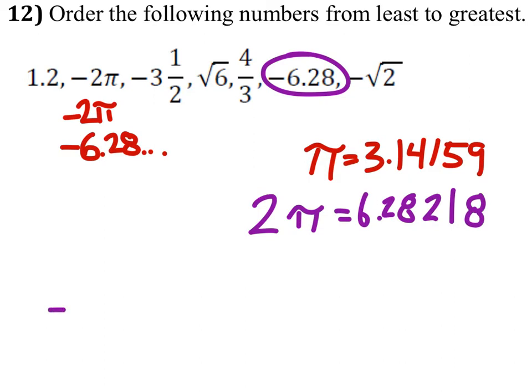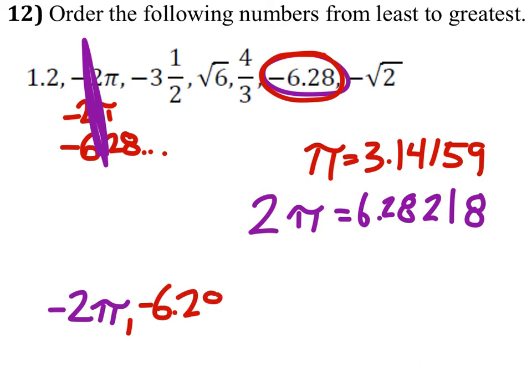In order, we've got negative 6, no, negative 2π, which has been used now. The next lowest of the numbers is very close to it, negative 6.28. So we use these.